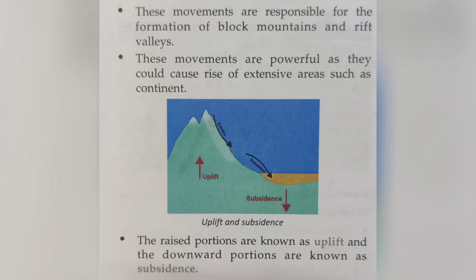See the figure. Upliftment makes a mountain and subsidence causes depression. The figure shows upliftment and subsidence. The raised portion is known as upliftment and the downward portion is called subsidence.